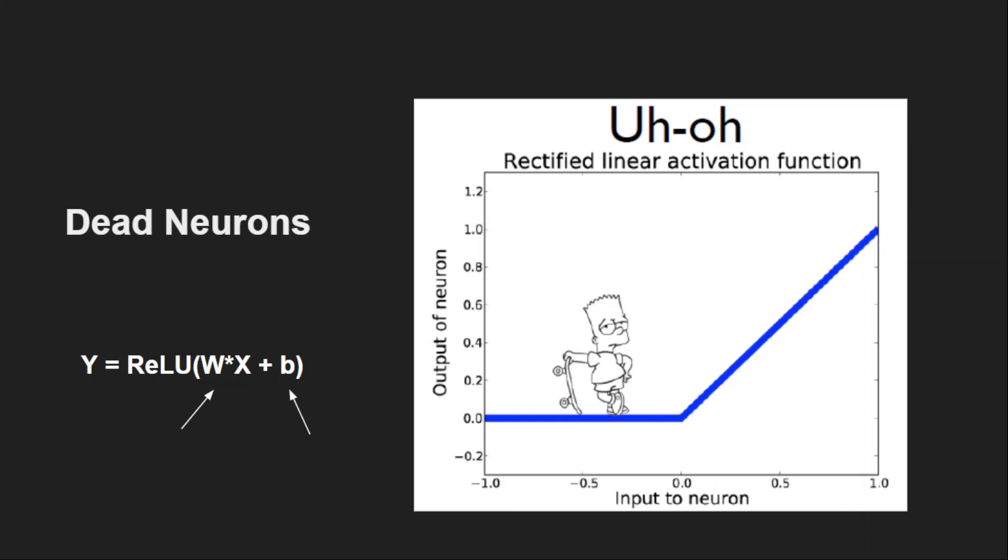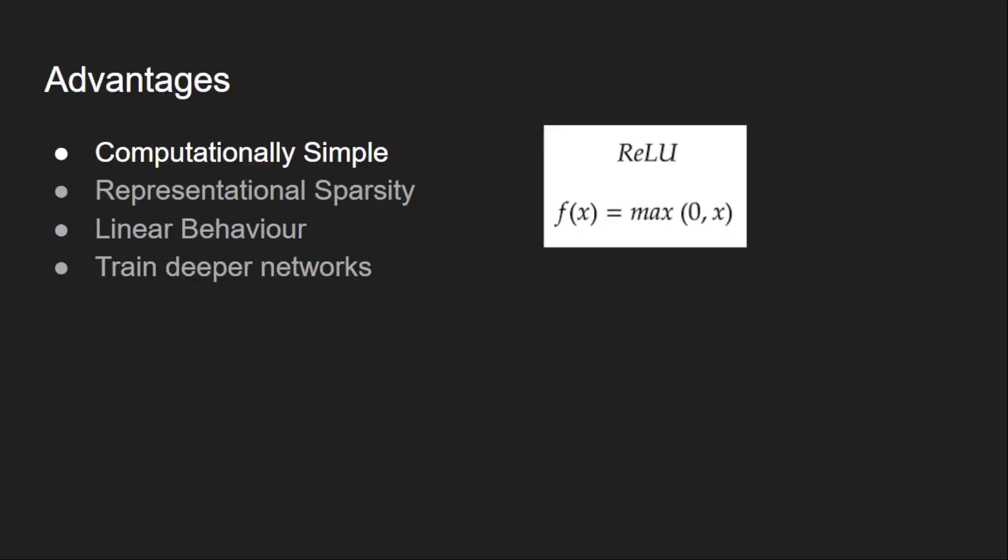It's surprising that it is a very simple function, yet ReLU works great in most of the applications and it is widely used. Now let's see why it is the most used function. The first reason is its complexity. The function computation is very simple - just take the maximum of zero or the input. Even its derivative computation is pretty straightforward. Its derivative is either zero or one based on the sign of the input. So the training is much faster compared to sigmoid and tanh.